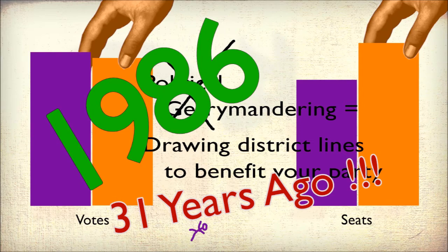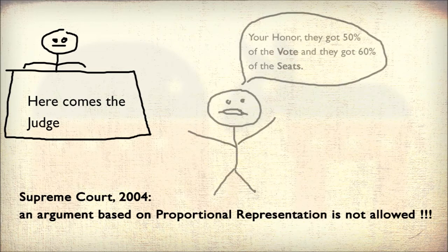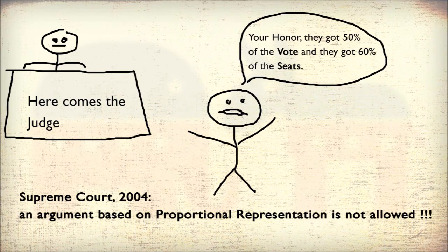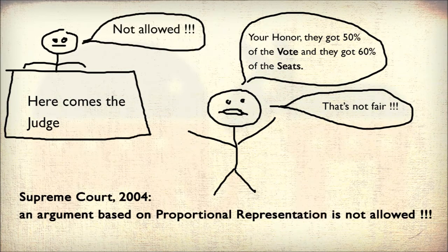Why is this? Well, the Supreme Court has also ruled that proportional representation is not constitutionally guaranteed, which means that no matter how obvious a gerrymander may be, a judge will not allow an argument such as: it is unfair that their party was elected to 60% of the legislative seats while they received only 50% of the vote. This is a seats-votes argument, also known as an argument based on proportional representation, and these arguments are not allowed in the courts.